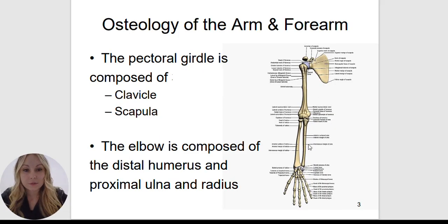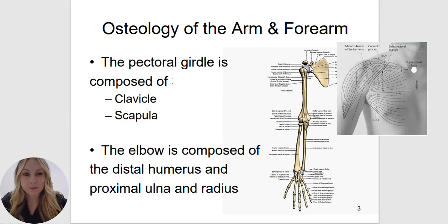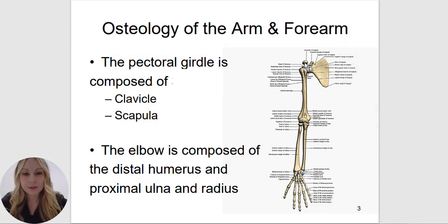This would be an anterior view of the arm. The coracoid process is on the anterior portion of the scapula. Right below the coracoid process, you would see the acupuncture point lung 1, and right below that, lung 2 if you are an acupuncture student. The acromion process is the flat portion of the shoulder. The humerus sits inside the glenoid fossa of the scapula, and that is considered your glenohumeral joint — the glenoid fossa articulates with the humerus.